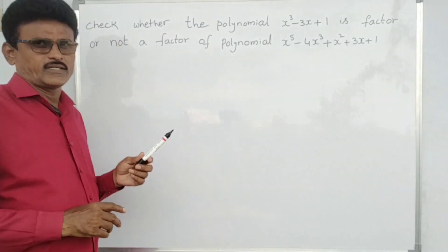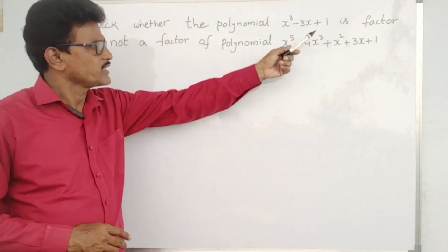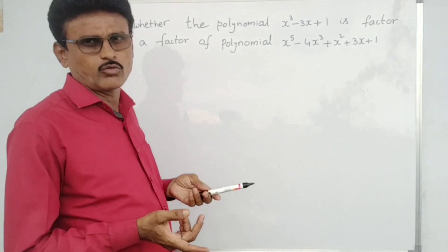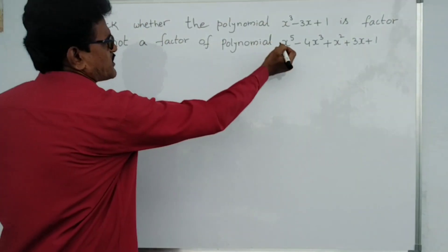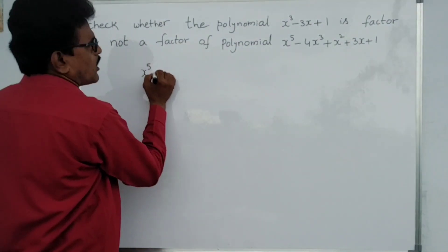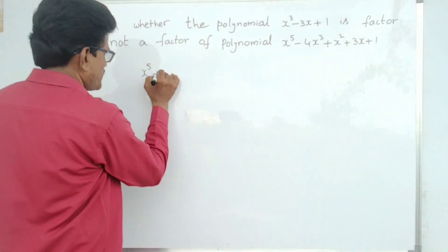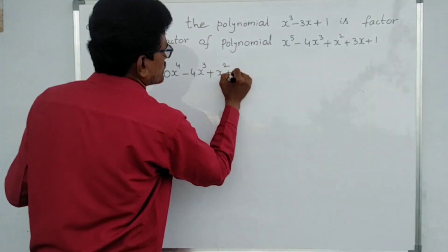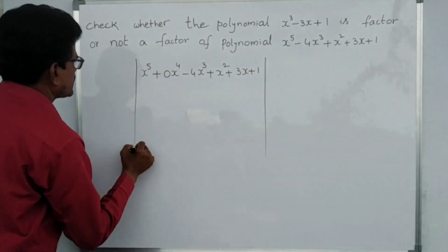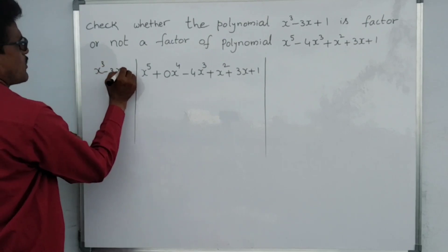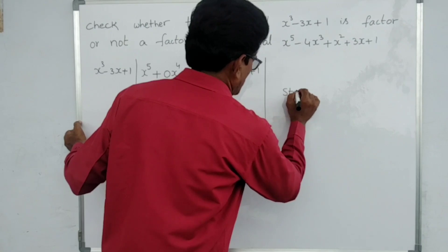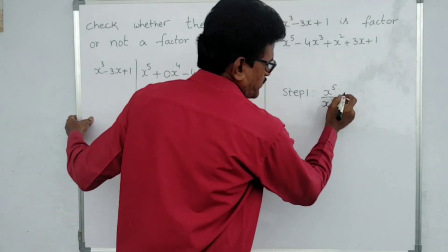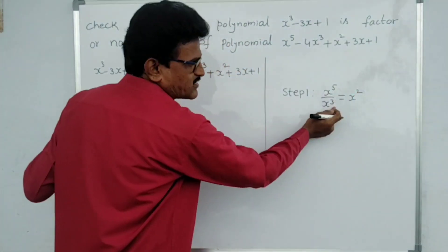In the third problem, check whether a cubic polynomial is a factor of a fifth-degree polynomial. We divide one polynomial by the other. The fifth-degree polynomial is x⁵ minus 4x³ plus x² plus 3x plus 1. Since the x⁴ term is missing, write it as x⁵ plus 0·x⁴ minus 4x³ plus x² plus 3x plus 1, divided by x³ minus 3x plus 1.